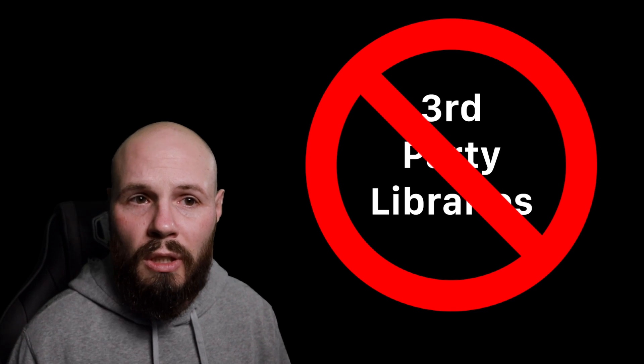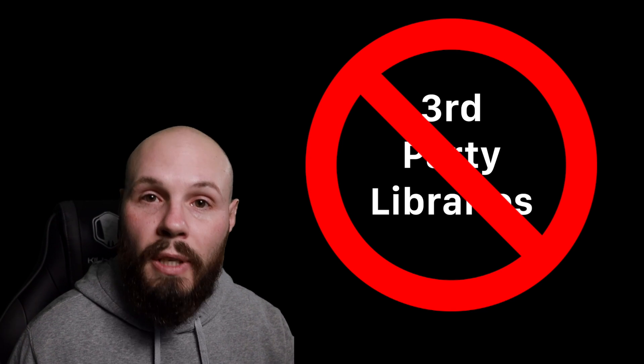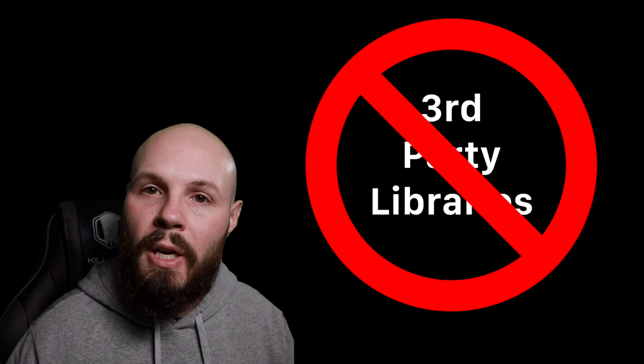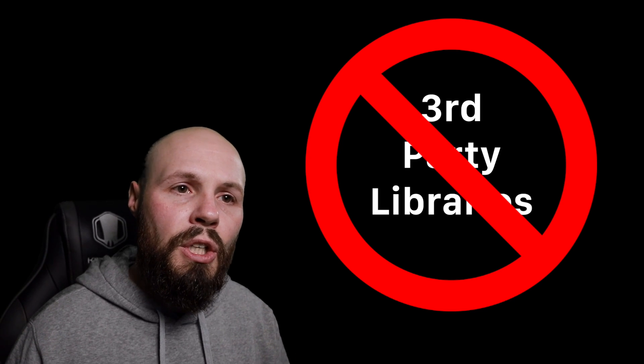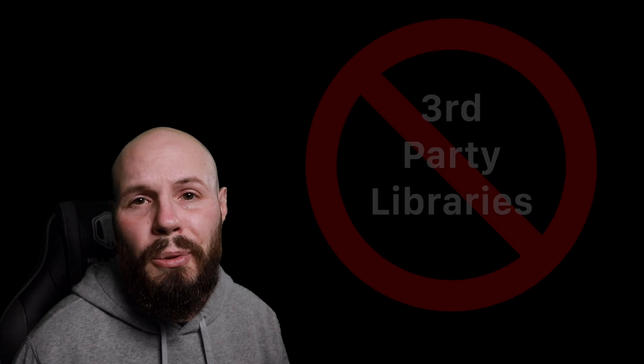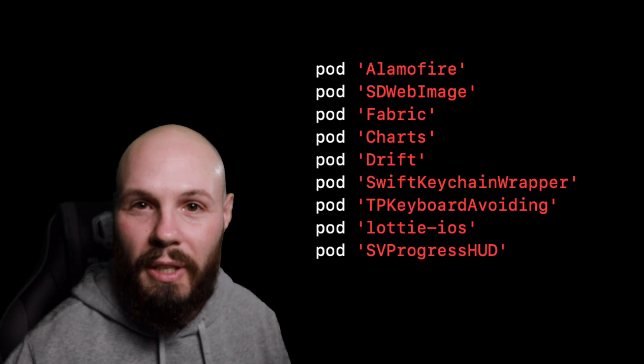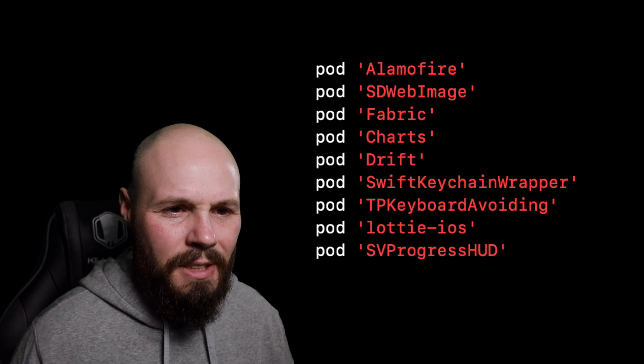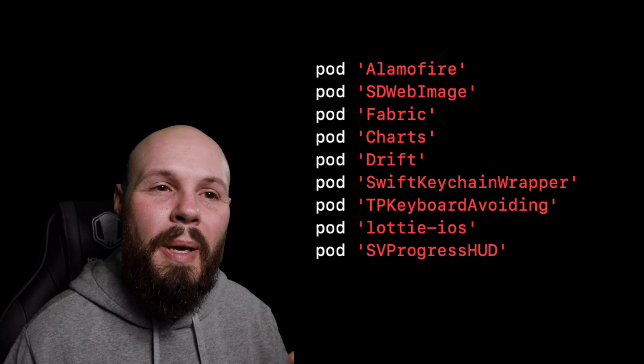Why no third-party libraries? Same logic as programmatic UI — you're going to learn more. When you learn to write networking yourself rather than using Alamofire, you can make a better, more informed decision when it comes time to use a library. In this app all we're doing is basic GET requests — you don't need Alamofire for that. It also helps on take-home projects: from personal experience, we tend to judge submissions that have seven third-party libraries in a small project. Did you even write anything, or just use a library for everything? The fewer libraries you use, the better it looks.